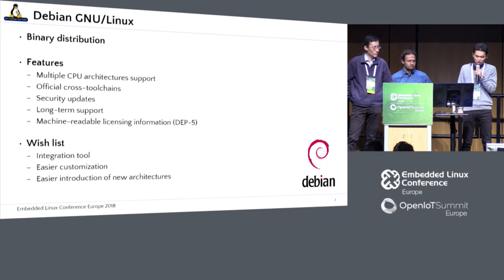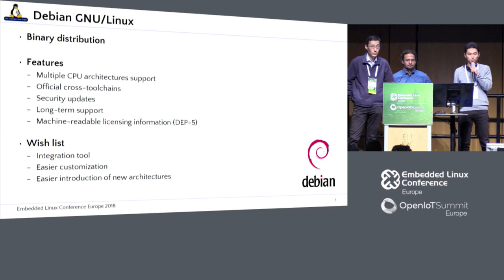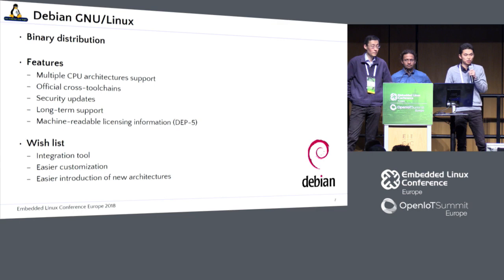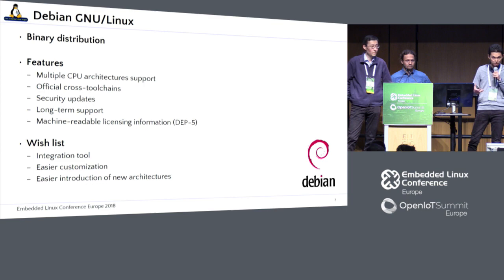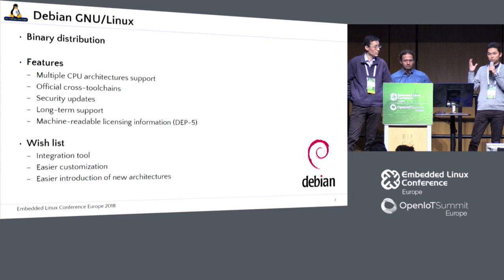But we need to integrate applications or some third-party software into the Debian system when creating products. We also need to customize some packages. Debian binary packages are very stable and well-tested, but sometimes we need to unpack them and change some configuration. Also, in the embedded world, sometimes we need to support the very latest SoC architectures.